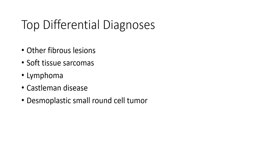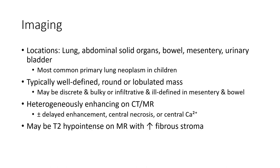Top differentials include atelectasis, other fibrous lesions, soft tissue sarcoma, lymphoma, and gastrointestinal stromal tumor. On imaging, locations include the lung, abdomen, solid organs, mesentery, and urinary bladder. IMT is the most common primary lung neoplasm in children.